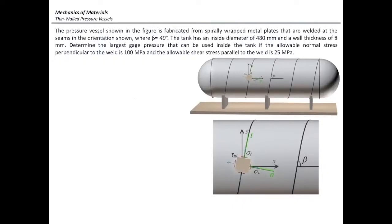First, we need to determine stresses in the original plane in the x and y direction, and then rotate them to determine stresses in the seams. Beta is 40, internal diameter is 480 mm, radius half of that, weld thickness 8.